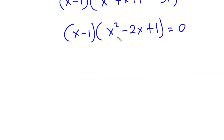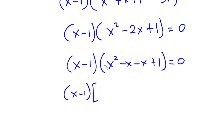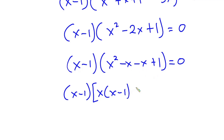Now let's simplify this further. We have x minus 1 into... the quadratic expression x squared minus 2x plus 1 can also be written as x squared minus x minus x plus 1, and this is equal to 0. Considering this expression, we can factor x out to get x into x minus 1, and then factor negative 1 out to get negative 1 into x minus 1.